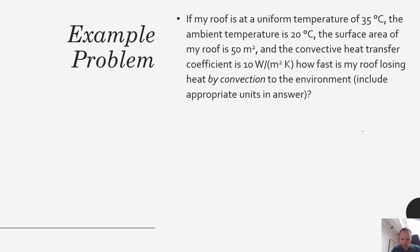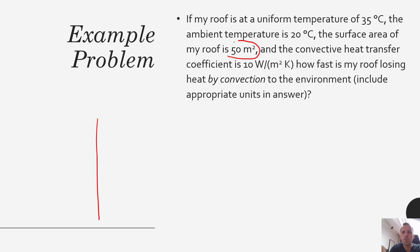Let's look at an example problem. If my roof is at a uniform temperature of 35°C and the ambient temperature is 20°C, the surface area of my roof is 50 m², and the convective heat transfer coefficient is 10 W/m²·K — how fast is my roof losing heat by convection to the environment? Since the roof area is included, this implies we're using the total heat rate rather than heat lost per meter squared.